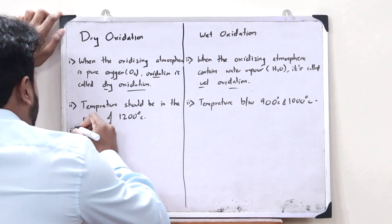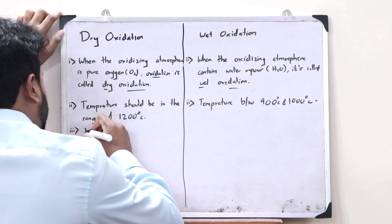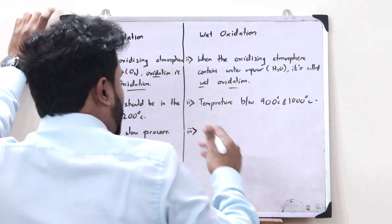Dry oxidation is a very slow process, but wet oxidation is a rapid process.